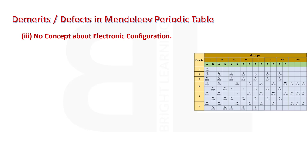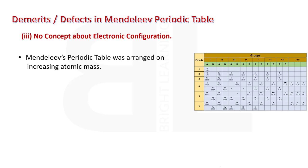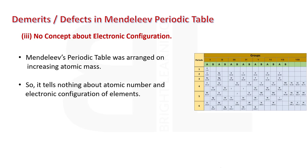In Mendeleev's periodic table, there was no concept of electronic configuration, as the table was arranged on the basis of increasing atomic masses. So it tells nothing about atomic number and electronic configuration of elements.